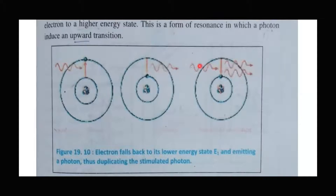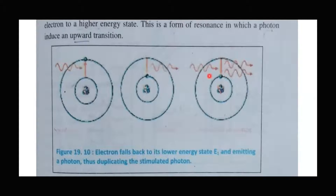If you bombard an excited electron externally with a photon, the result is that due to that external photon, the electron will de-excite. During its de-excitation from the upper energy level to the lower energy level, it will emit two photons — one which it had absorbed to get excited, and a second photon emitted due to the external photon that struck it. So, due to an external cause, two photons are emitted. This two-photon emission is an example of stimulated emission.